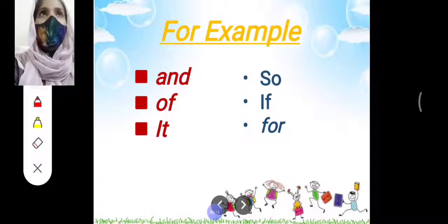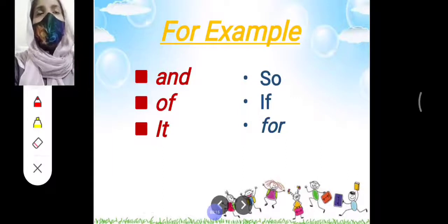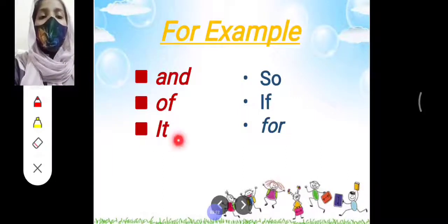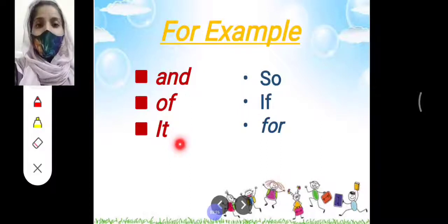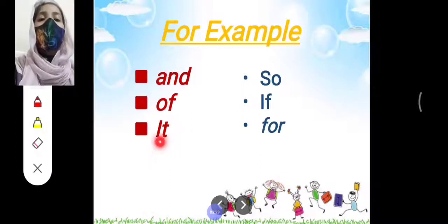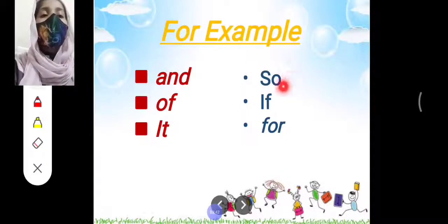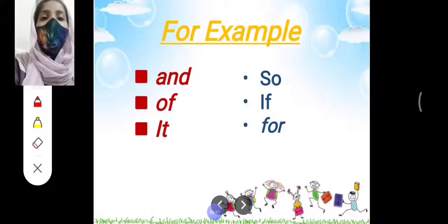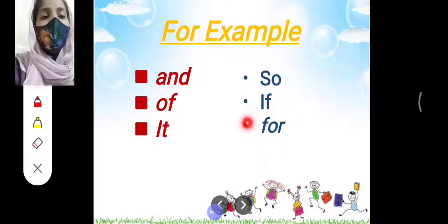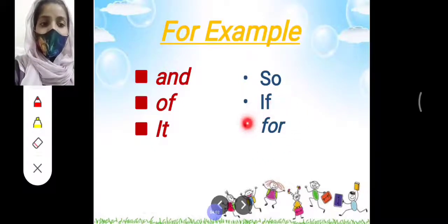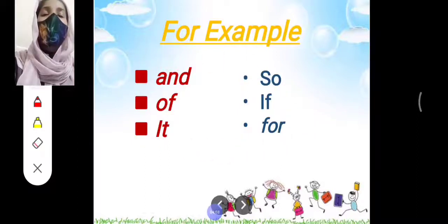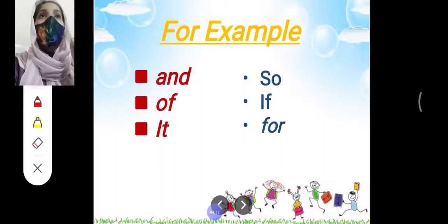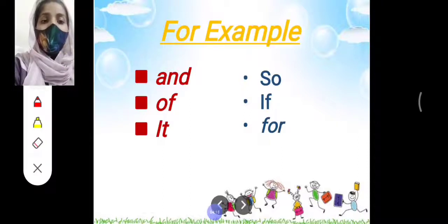We see 'of' written somewhere and our mind immediately recognizes that this word is 'of.' Next we have 'it' — we know what this word is without reading its spelling. 'So' is also a word that we recognize instantly. Next we have 'if' — also a sight word. Next we have 'for' — also a sight word. Words that we recognize instantly the moment we see them — those are our sight words. Understand?